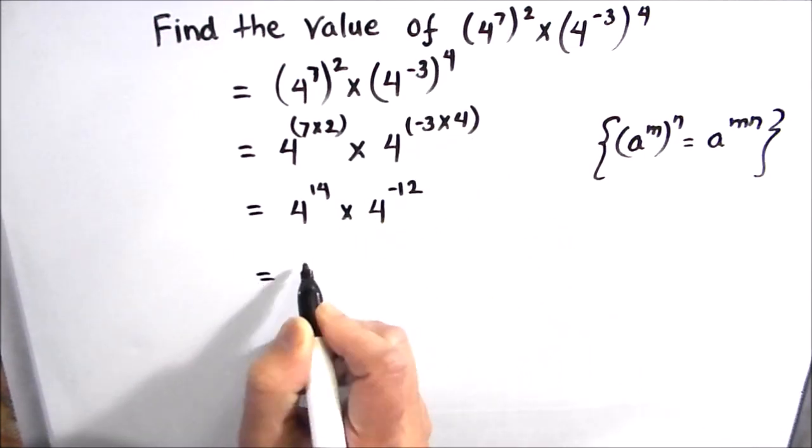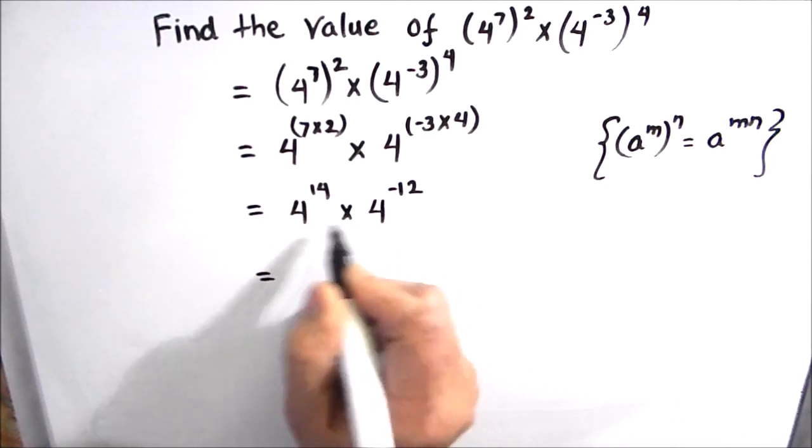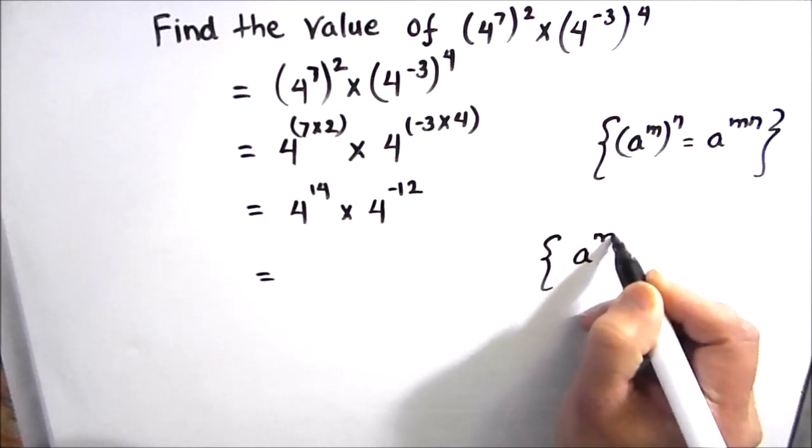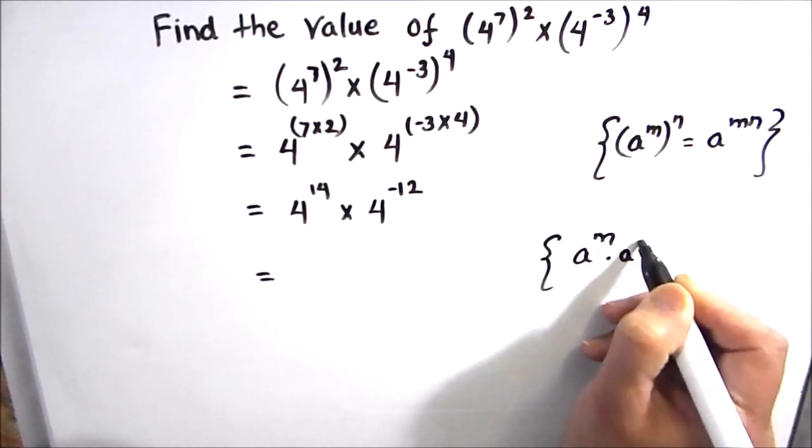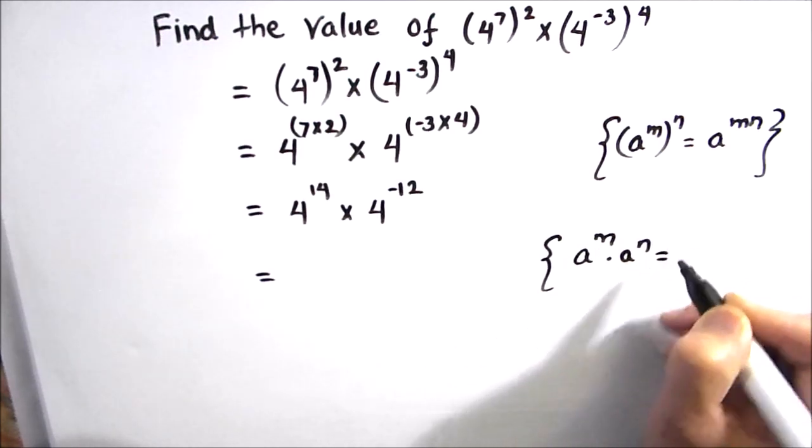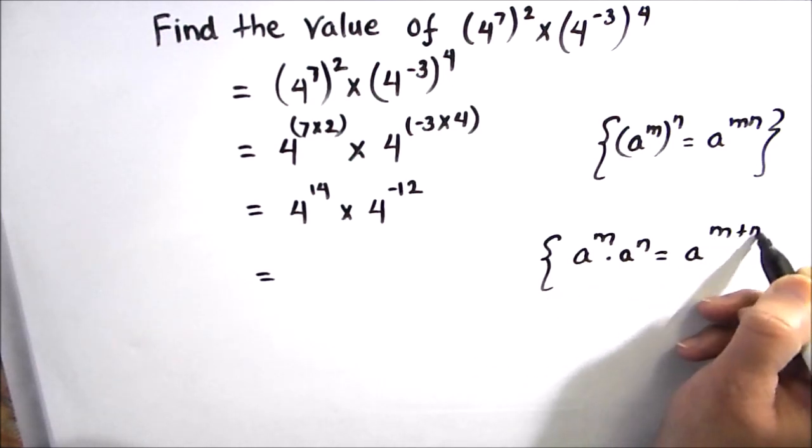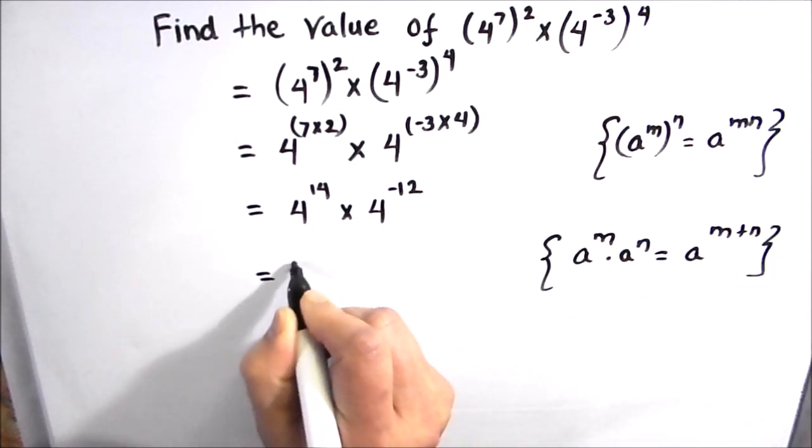Now again we have the same bases and they are getting multiplied, so we are going to make use of the exponential law a^m × a^n = a^(m+n). When they are getting multiplied, the powers get added.